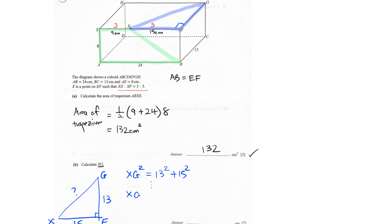So XG squared equals 13 squared plus 15 squared. Very quickly, we're going to get XG to be approximately 19.849. I'll leave it as that. So I have the 5SF and then the 3SF version, so 19.8 centimeters. So part A and B done.